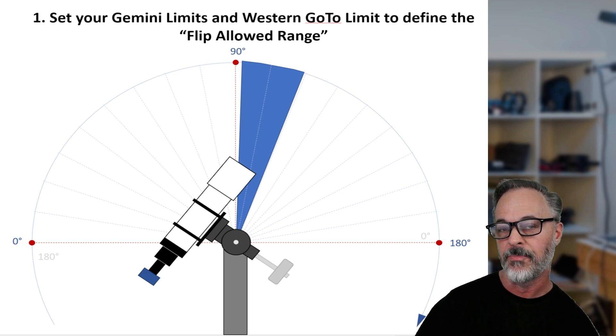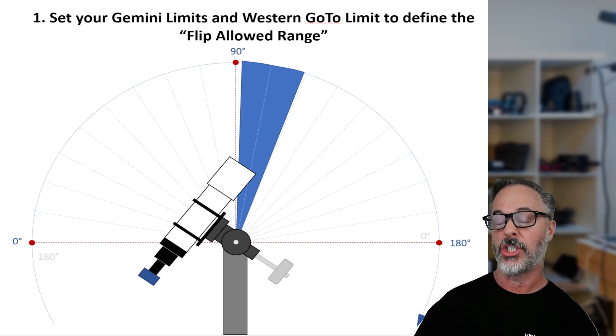These are three settings total in your Gemini that defines what I call the flip allowed range. So there's a range of time or a range of sky angular values, but let's consider it as time in which a flip, if the command is received is going to be successful.